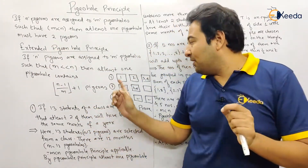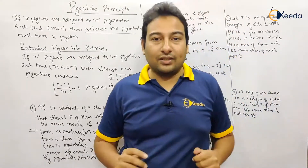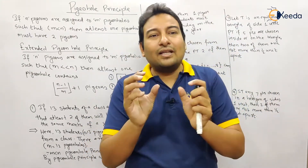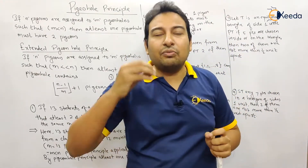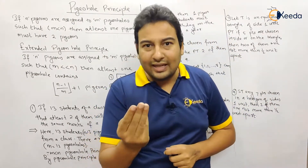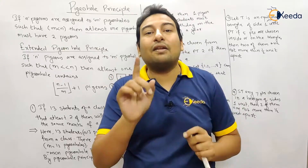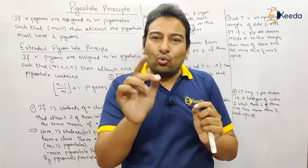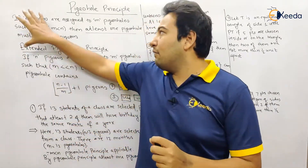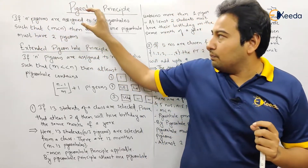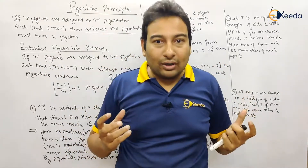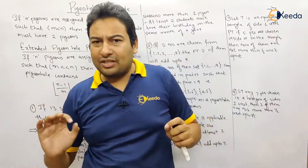By the definition, if there are n pigeons and m pigeonholes where m is less than n, then at least one pigeonhole contains two pigeons. This is the Pigeonhole Principle. When to use it: if there is a very small difference between the number of pigeons and pigeonholes, we use the basic Pigeonhole Principle. If the difference is larger, we use the Extended Pigeonhole Principle.